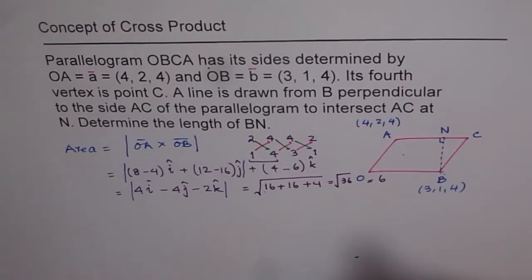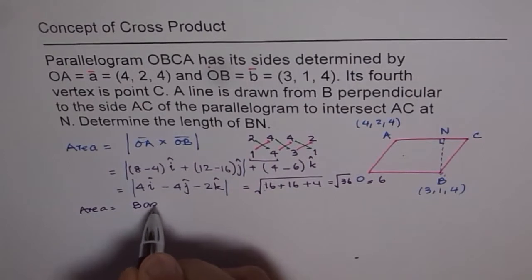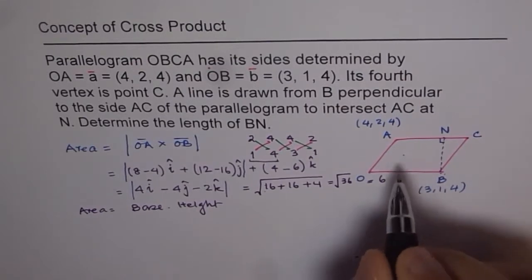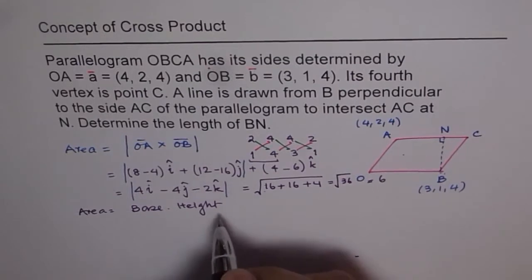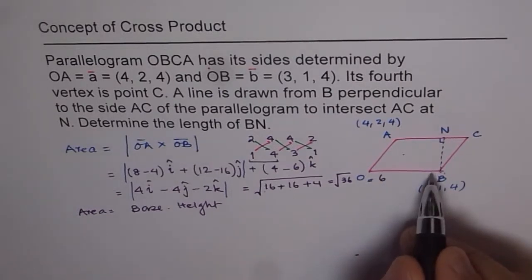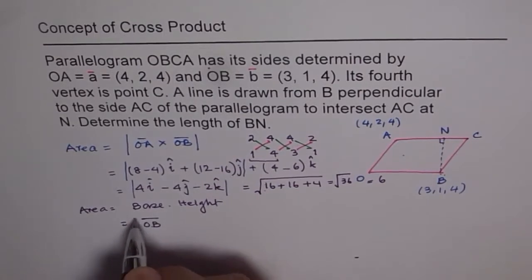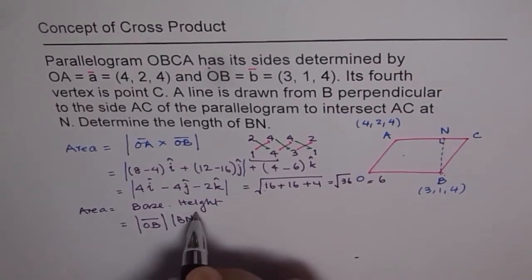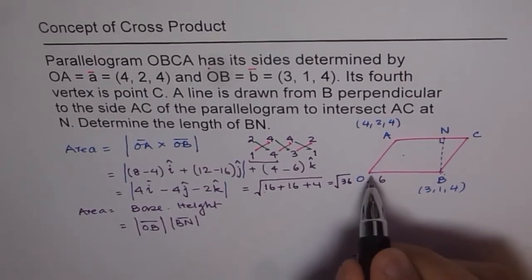Now, as you know, area of parallelogram is also base times height. Now here, the base is AC or OB. Both are same. Both are parallelograms. So we can say base is OB. So the magnitude of OB. So base for us is equals to magnitude of OB. And height for us is BN. Magnitude of BN is the height.